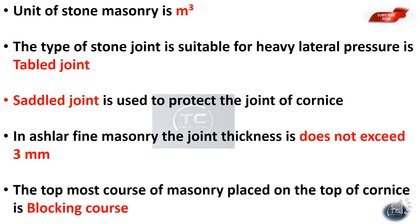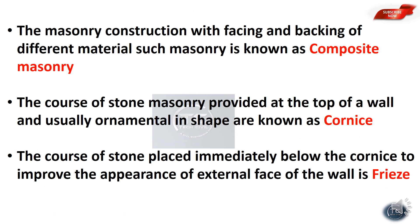The topmost course of masonry placed on top of a cornice is called blocking cornice. Composite masonry uses different materials for the facing and backing, resulting in a combined form. Masonry using different materials is known as composite masonry.